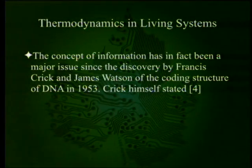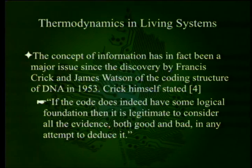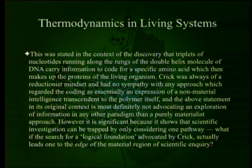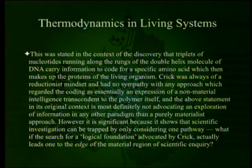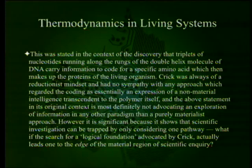The concept of information has been a major issue since the discovery by Francis Crick and James Watson of the coding structure of DNA in 1953. Crick stated: 'If the code does indeed have some logical foundation, then it is legitimate to consider all the evidence, both good and bad, in any attempt to deduce it.' This was stated in context of the discovery that triplets of nucleotides along the double helix can carry information to code for specific amino acids. Crick was of a reductionist mindset and had no sympathy with any approach regarding coding as an expression of non-material intelligence. He notes this so nobody accuses him of quote mining.